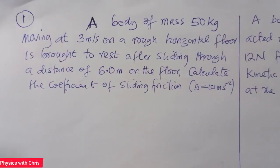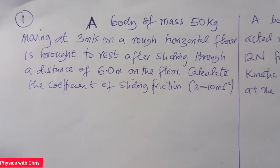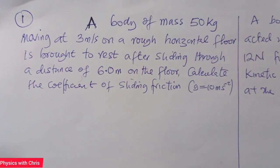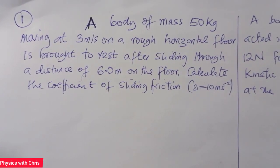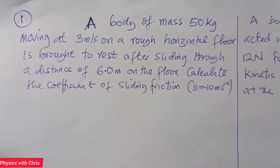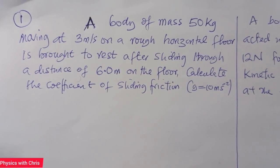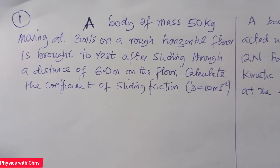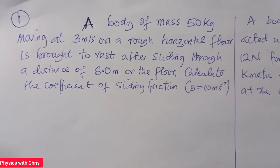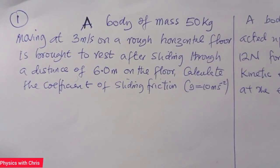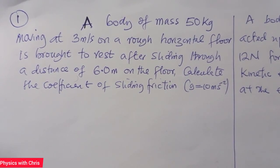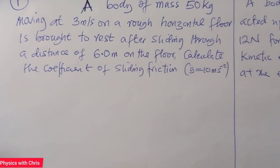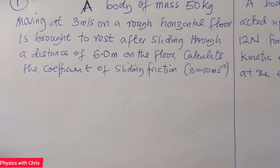Let's take a look at these questions, still on dynamics of motion along a straight line. These questions are extracted from past WAEC and JAMB past questions. A body of mass 50 kg moving at a speed of 3 m/s on a rough horizontal floor is brought to rest after sliding through a distance of 6 m on the floor. We have to calculate the coefficient of sliding friction.